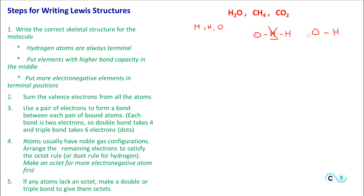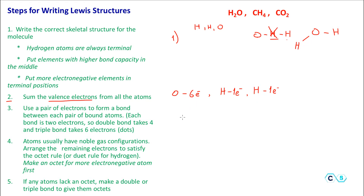The only option is to put the other hydrogen on the other terminal position as well. That's step one — we have the correct skeletal structure for water. Step two: sum the valence electrons of all the atoms. The group number tells us how many valence electrons each element has. Oxygen is group six, so it has six electrons. Each hydrogen has one electron, and we have two hydrogens, giving two electrons. Total: eight electrons.